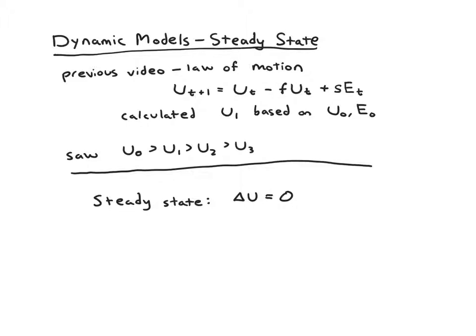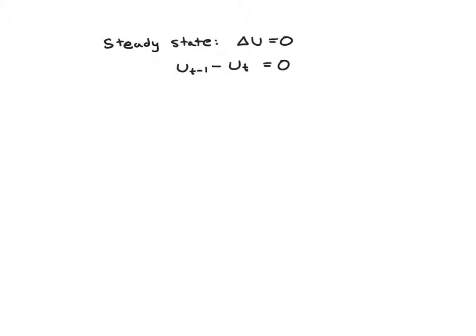Reproducing what we had before, we have our definition of our steady state: Δu = 0. Delta u means change in u, so it's u_{t+1} minus u_t. What I'd like you to do at this point is pause the video and plug in, fill in u_{t+1} with our basic equation for u_{t+1}, and then see if you can cancel out some terms.